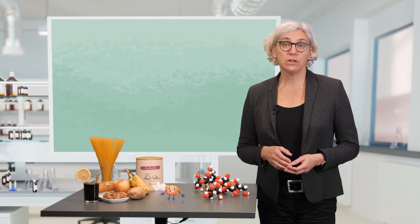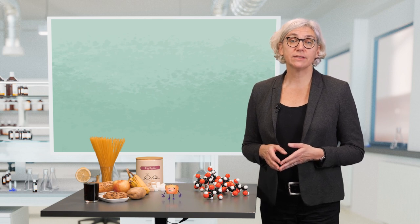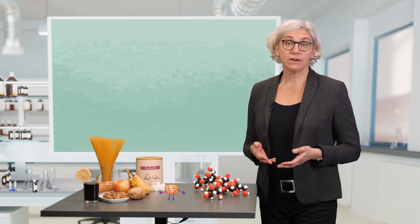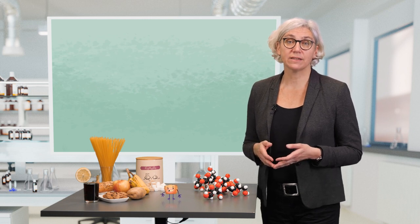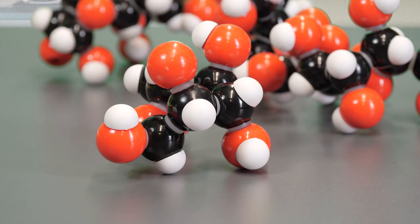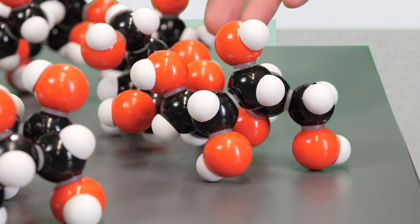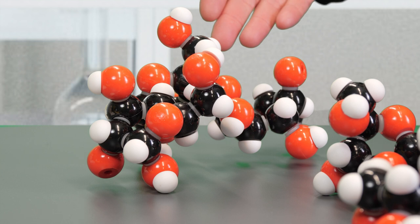The term sugar usually covers mono and disaccharides, which are those carbohydrates that taste sweet. Monosaccharides can be regarded as a kind of building blocks for disaccharides and polysaccharides. Here you can see a model for a monosaccharide. In this case, it is glucose. For a disaccharide, two building blocks are required and for a polysaccharide, we need three or more monosaccharide units.